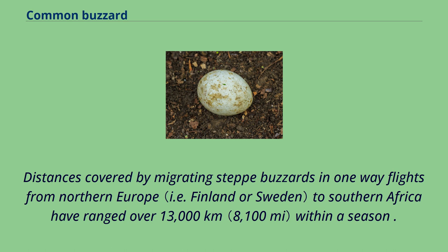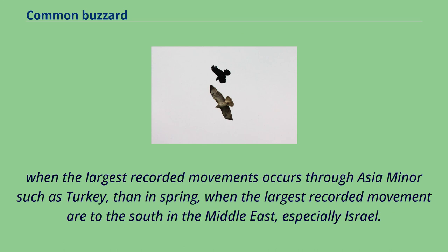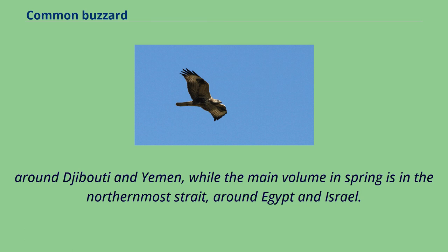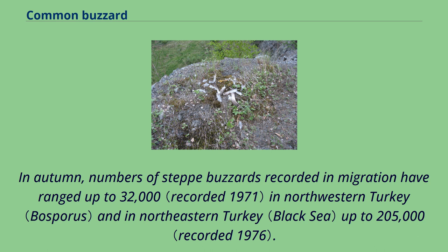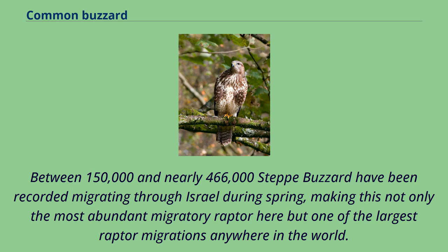For steppe buzzards from eastern and northern Europe and western Russia, peak migratory numbers occur in differing areas in autumn, when the largest recorded movements occur through Asia Minor such as Turkey, and then in spring when the largest recorded movements are to the south and the Middle East, especially Israel. In autumn, numbers of steppe buzzards recorded in migration have ranged up to 32,000 in northwestern Turkey and up to 205,000 in northeastern Turkey. Further down in migration, autumn numbers of up to 98,000 have been recorded in passage in Djibouti. Between 150,000 and nearly 466,000 steppe buzzards have been recorded migrating through Israel during spring, making this not only the most abundant migratory raptor here but one of the largest raptor migrations anywhere in the world.